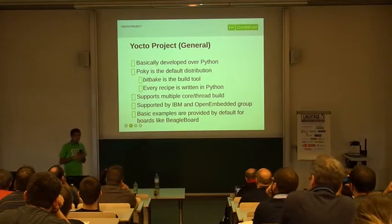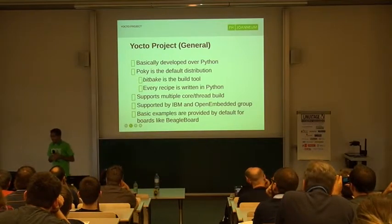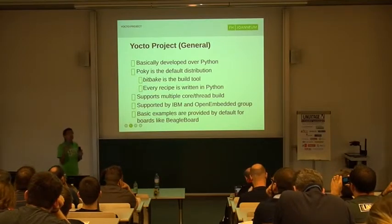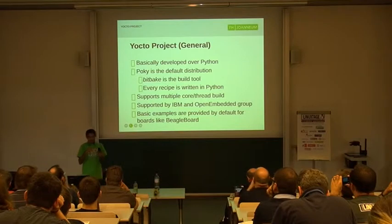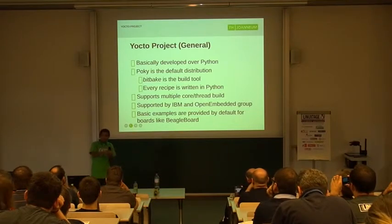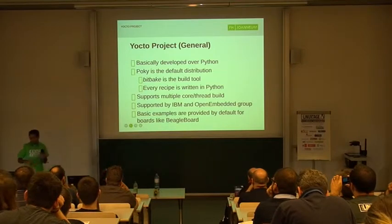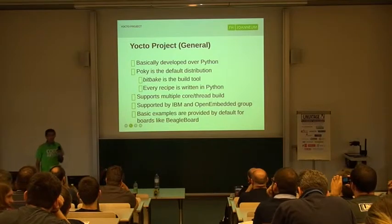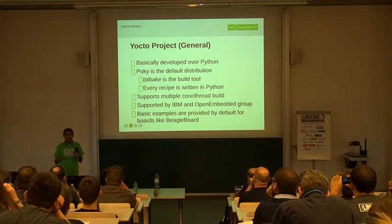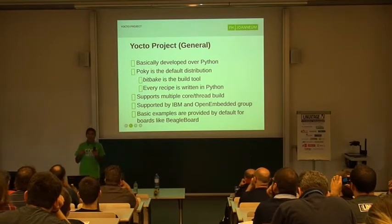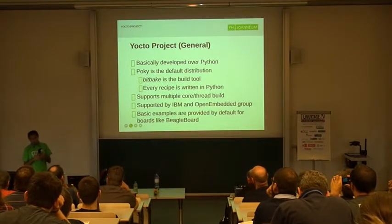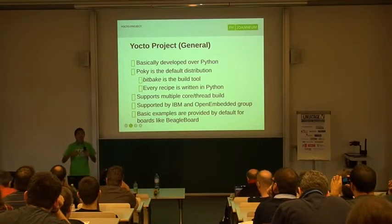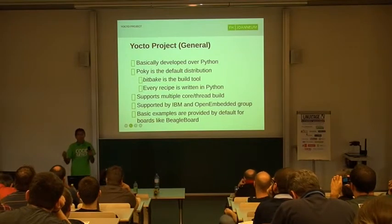The Yocto project is basically developed over Python. Poky is the name given for the default distribution. You can further decrease or increase the size — if Poky is in the medium, you can either make it thin or fat. BitBake is the build tool; it's like make. It's a funny name because everything we do over it is called a recipe — like you cook something. Suppose if you want a specific customized kernel, you create a recipe for it such that your build system accepts it.